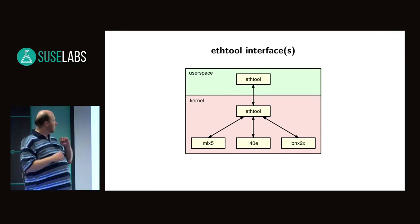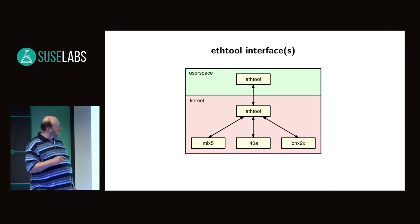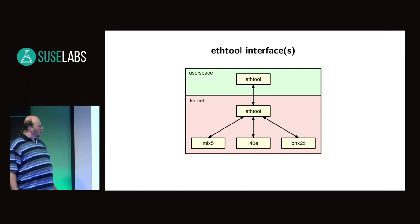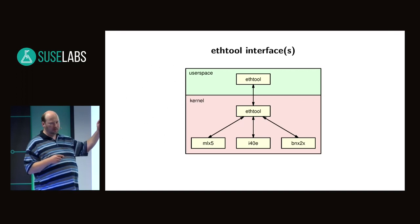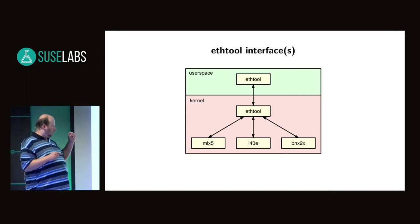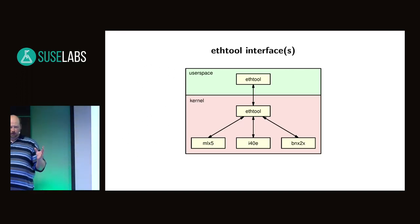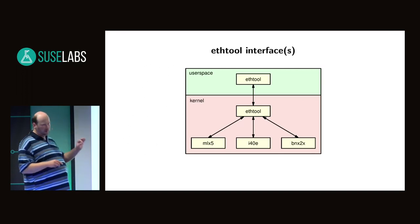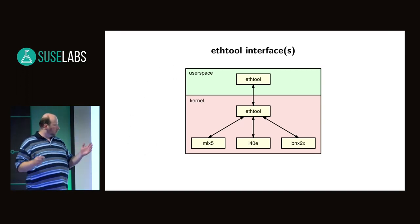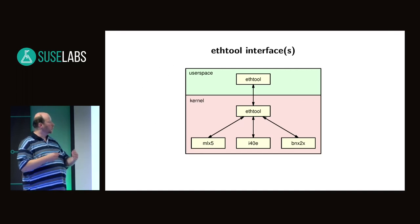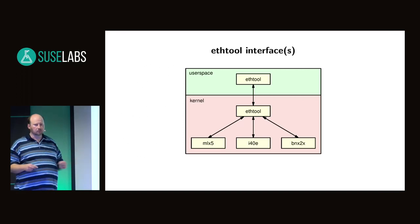There are actually two interfaces to keep in mind. One is the interface between the ethtool user-space utility and the ethtool subsystem in the kernel — this is the most important one I'll be discussing. The other is between the generic ethtool kernel subsystem and the actual feature implementations, mostly in network drivers, collected in struct ethtool_ops — a set of callbacks that serve as a dispatcher passing results back to user space.